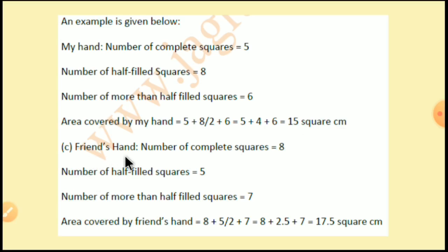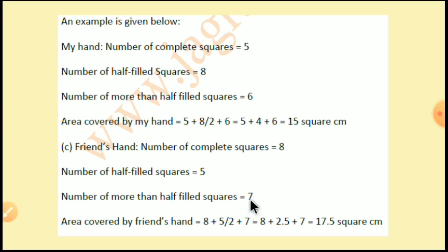Now, friend's hand — number of complete squares: 8, number of half filled squares: 5, number of more than half filled squares: 7. तो 8 plus 5 divided by 2 equals 2.5 plus 7, which equals 17.5 square centimeters.